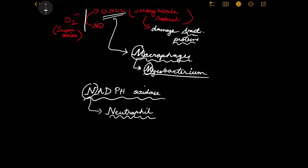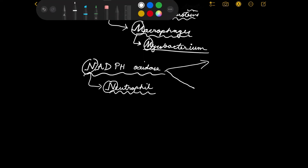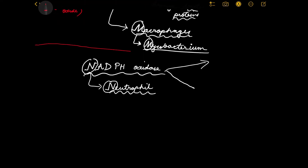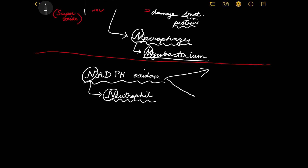Just as nitric oxide-derived free radicals are important for macrophages, NADPH oxidase is incredibly important for neutrophils. The second important point about NADPH oxidase: this enzyme has two components - one found within the membrane, and another that is a cytosolic component. Individually, these components are useless and cannot do anything. Only when they fuse together does the enzyme become complete and functional.